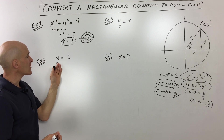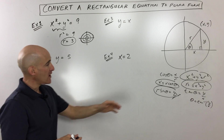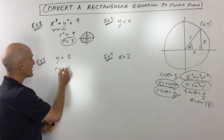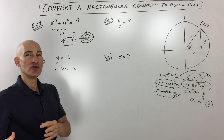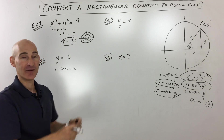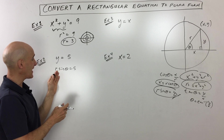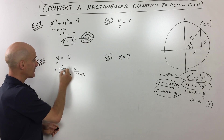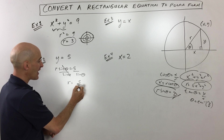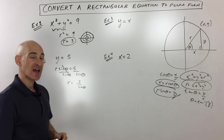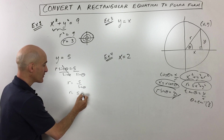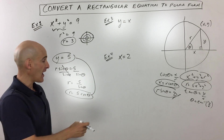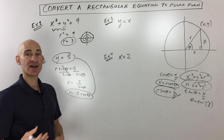Example two: y equals five. Since y equals r sine theta, we replace y to get r sine theta equals five. In polar form, you try to isolate r, so divide both sides by sine theta to get r equals five divided by sine theta. Since the reciprocal of sine is cosecant, this becomes r equals five cosecant theta. This is just another way of representing the horizontal line y equals five in terms of radius and angle.